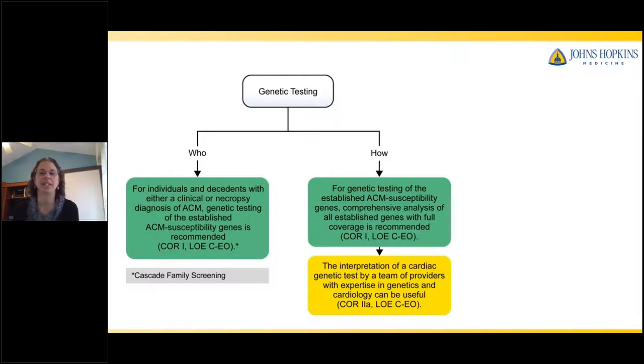You saw this slide before when Arthur showed it. So when the group came together, we have a class one recommendation that for individuals diagnosed with an arrhythmogenic cardiomyopathy, either while living or on autopsy, genetic testing is recommended of the ACM susceptibility genes. And how should you do that genetic testing? We came down in the committee saying, for genetic testing, we recommend testing all of these ACM susceptibility genes, including really a comprehensive analysis. And optimally, the interpretation of that genetic test should be done with a team of providers with expertise in both genetics and cardiology. Cascade testing is also recommended, although there's some nuance to that.